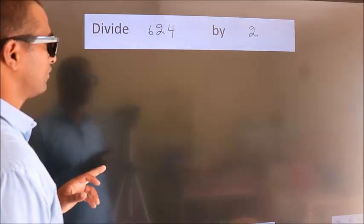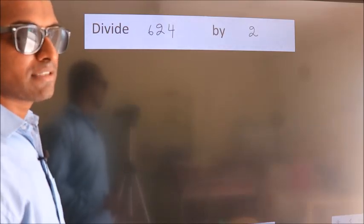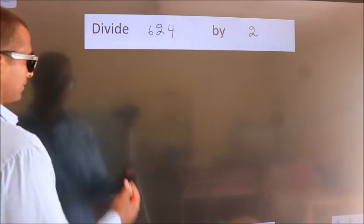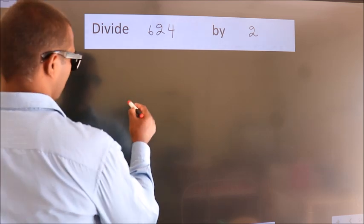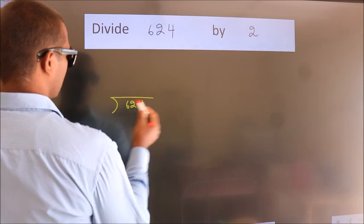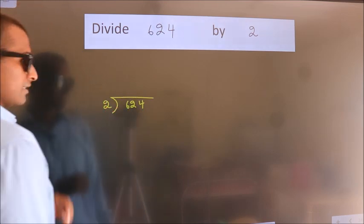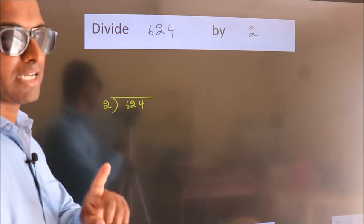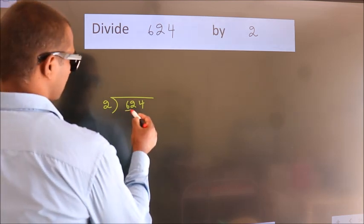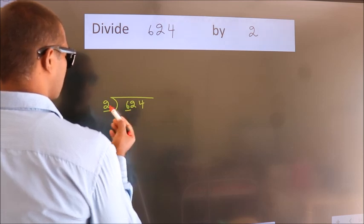Let's divide 624 by 2. To do this division, we should frame it in this way: 624 here, 2 here. This is your step 1.